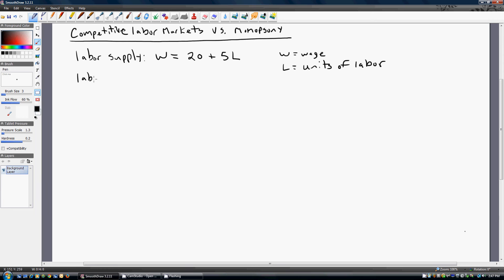And labor demand, market labor demand conditions, are going to be represented by the marginal revenue product equals 100 minus 5 times L. MRP is the marginal revenue product of labor.